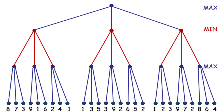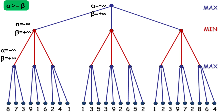Now let's solve a complete example to understand the alpha-beta pruning algorithm. First, assign alpha equal to negative infinity and beta equal to positive infinity to the root node, and the same will be propagated down to the extreme left. The condition of pruning is alpha greater than or equal to beta. At max level the value of alpha will be updated, and at min level the value of beta will be updated.